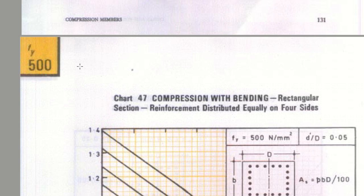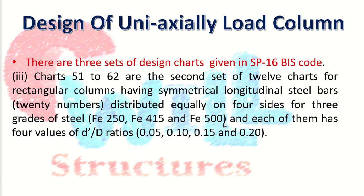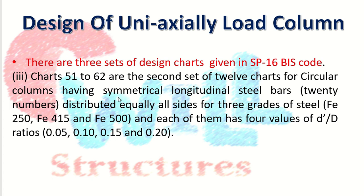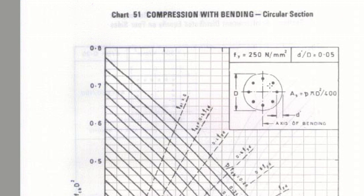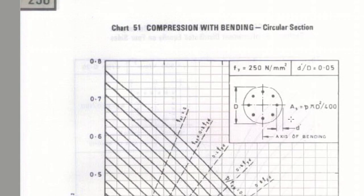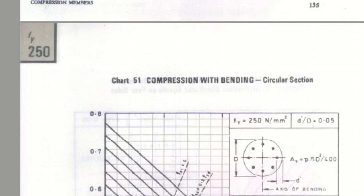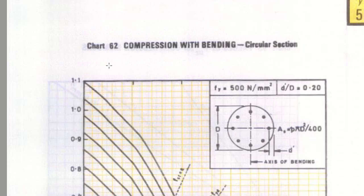The third set, charts 51 to 62, is for circular columns with symmetrical longitudinal steel bars distributed equally on all sides, similarly for steel grades 250, 415, and 500, with d'/d values of 0.05, 0.1, 0.15, and 0.2. These are compression-with-bending charts for circular sections. You can see the circular column diagram and charts 51 to 62 for different steel grades and d'/d values.